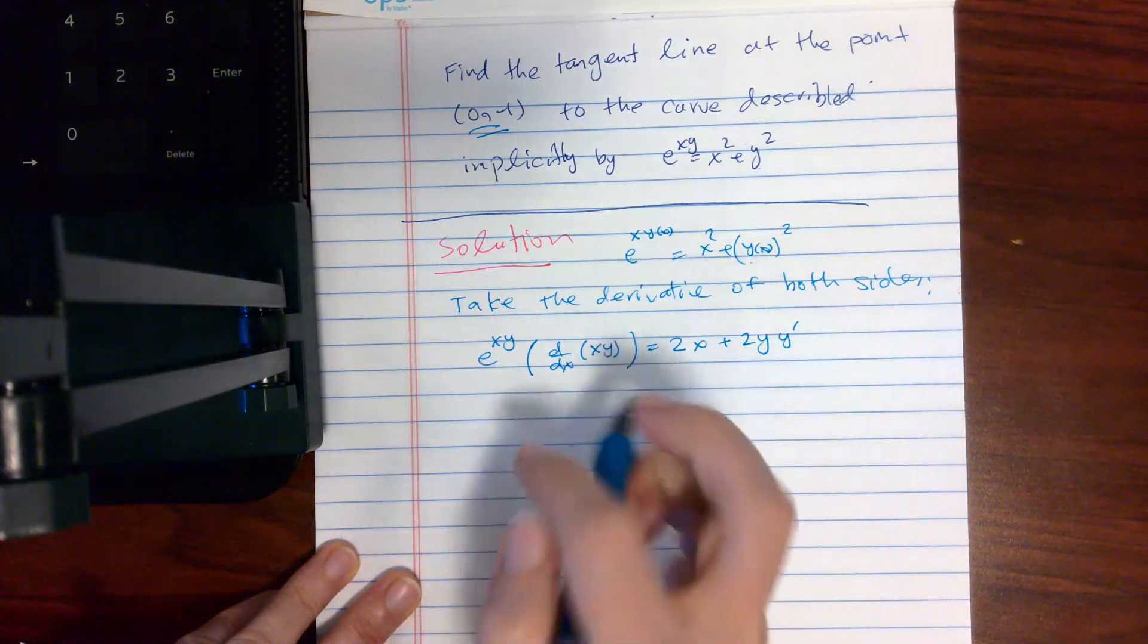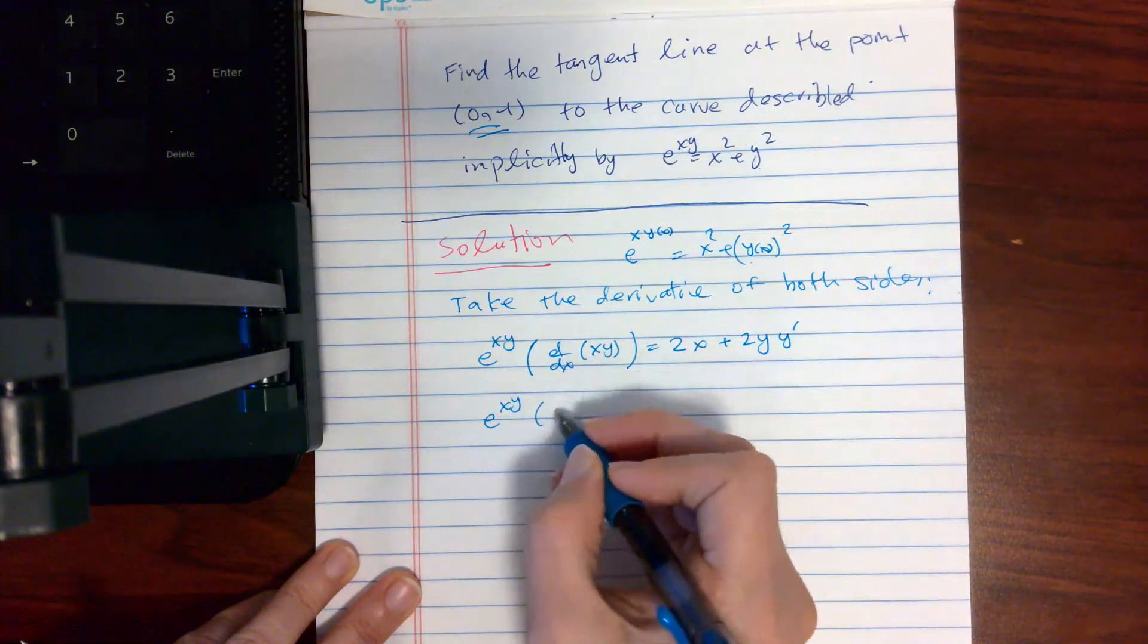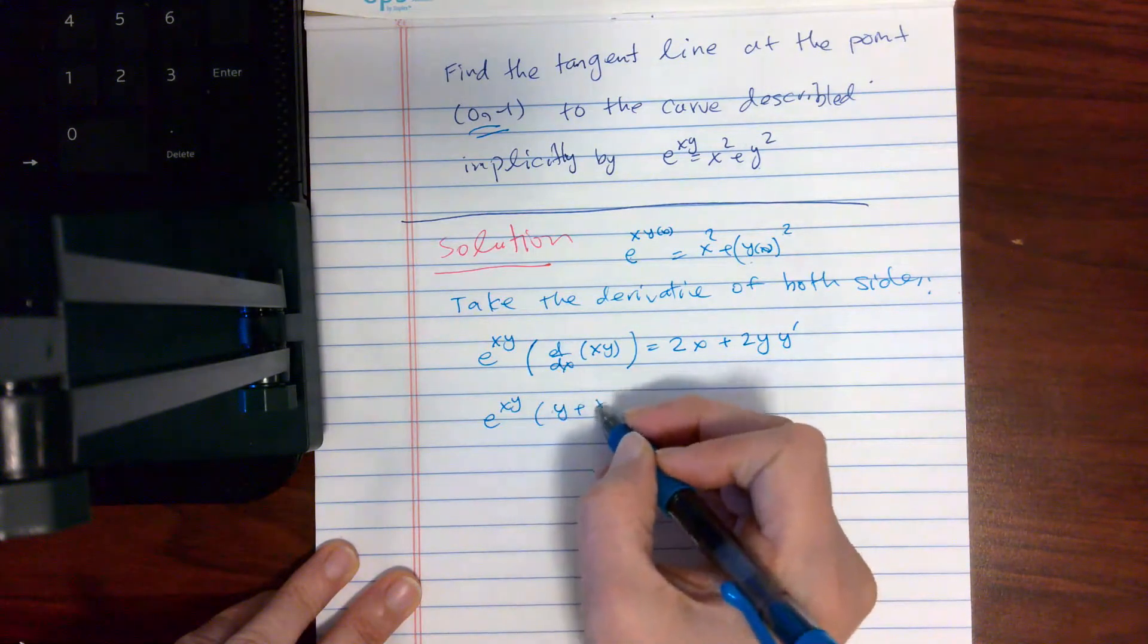And in here also, e to the power xy is going to be derivative of product rule, derivative of x times y plus x times derivative of y.